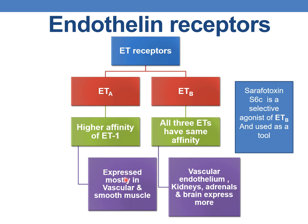ETA receptors are mostly expressed in vascular smooth muscle, whereas ETB receptors are expressed in vascular endothelium, kidneys, adrenals, and brain. Sarafotoxin SC6 is obtained from venom and is a selective agonist of ETB, and is used as a pharmacological tool to study the actions mediated by ETB receptors.